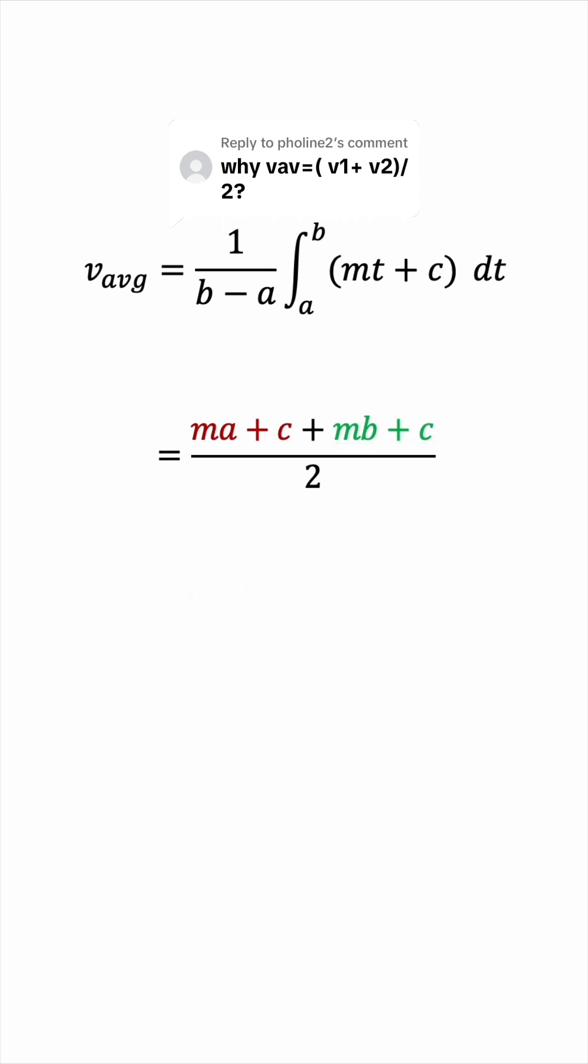So the average velocity works out to be v at a plus v at b all over 2. And that's precisely what I said in the video. It's the average of the initial velocity and the final velocity. So hope that helps. Thank you.